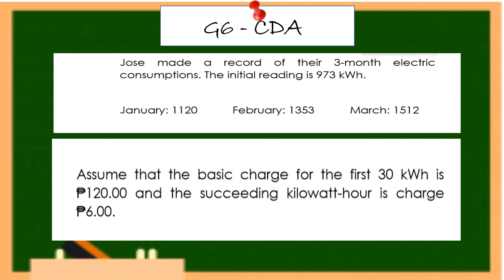To find the amount Jose will pay each month: subtract the initial or previous month's reading from the current month's reading to get monthly consumption. Then subtract 30 kilowatt-hours from the monthly consumption and multiply the result by 6 pesos. Add 120 pesos for the first 30 kilowatt-hours. To get the average monthly consumption, total the consumption for three months and divide by three.